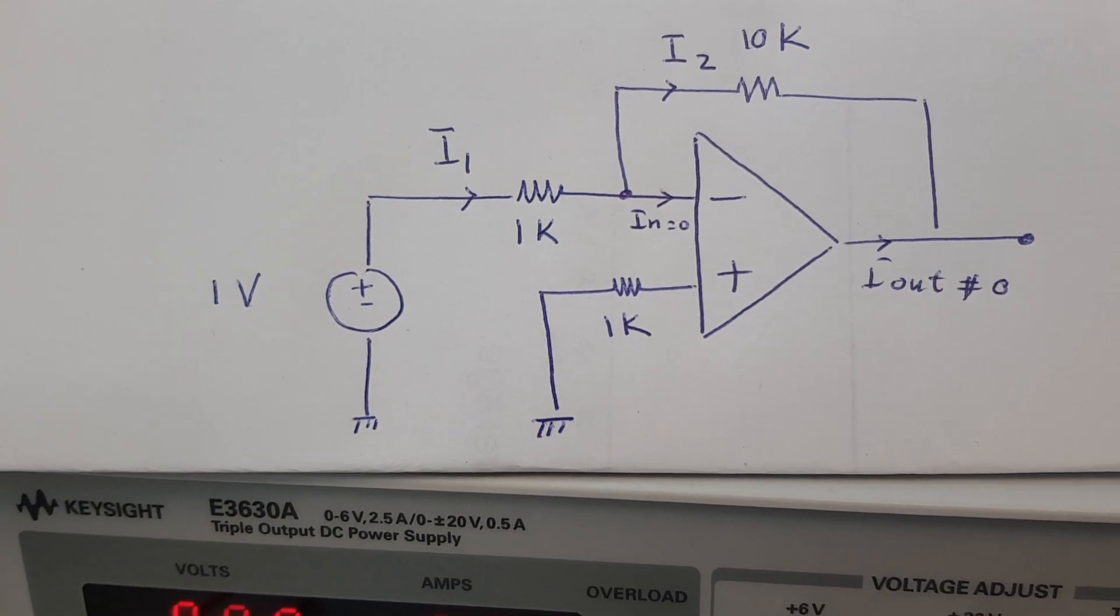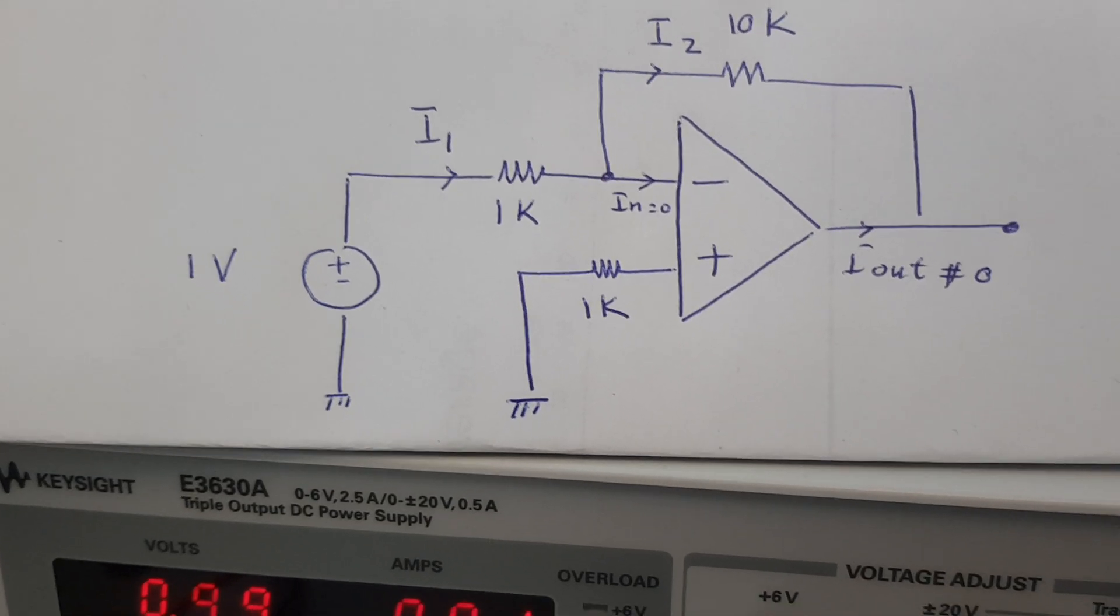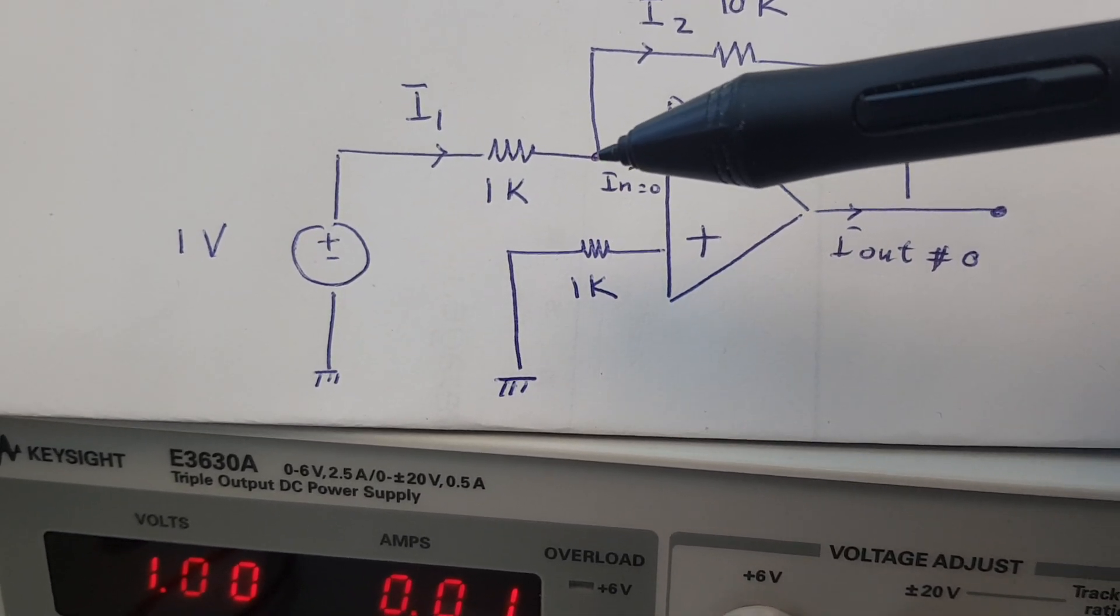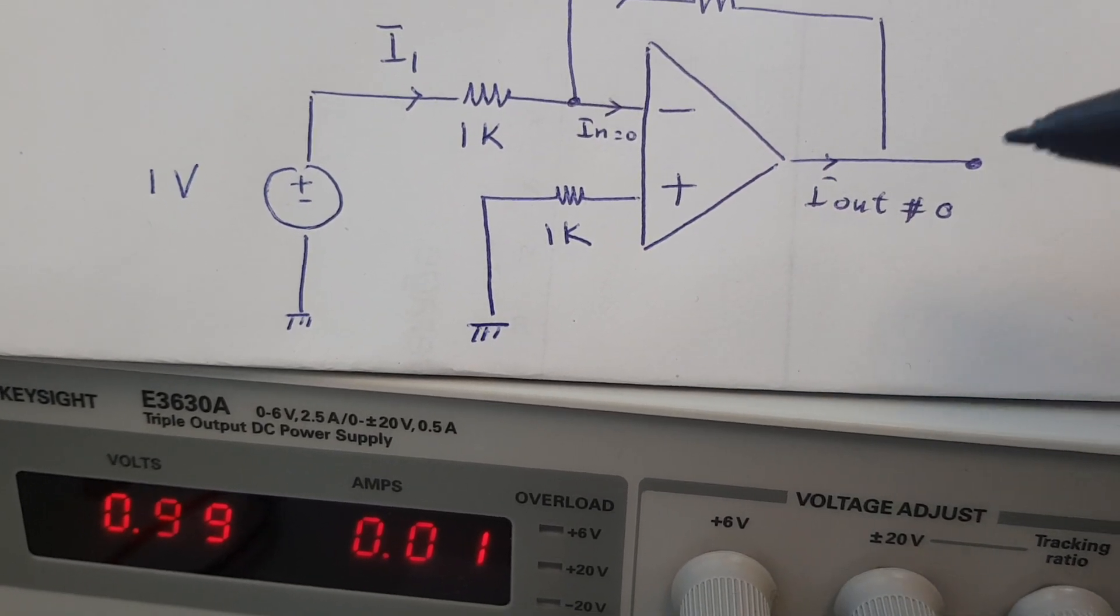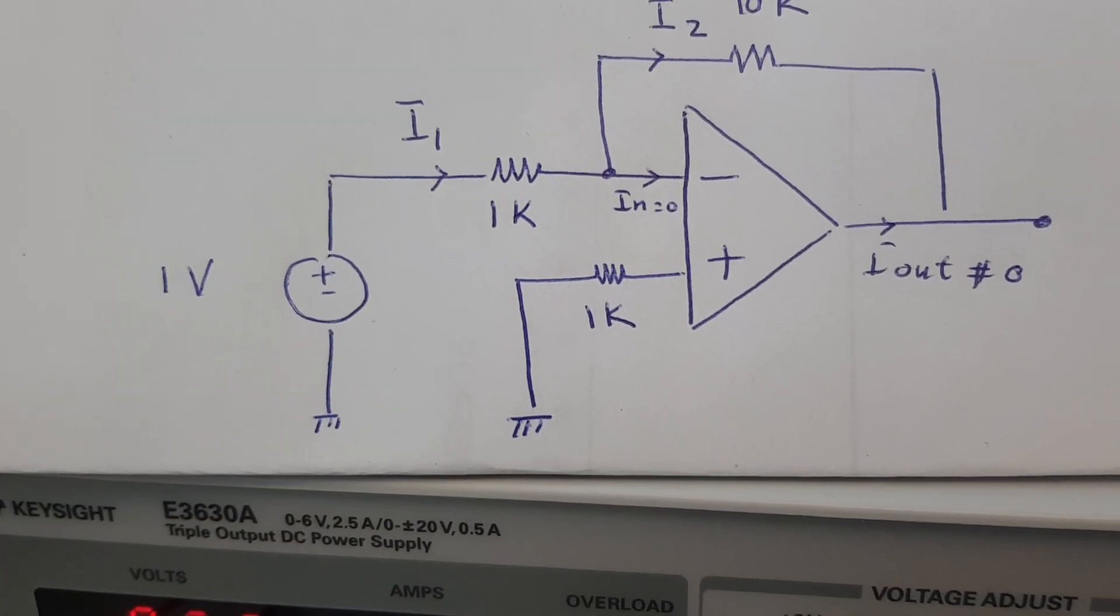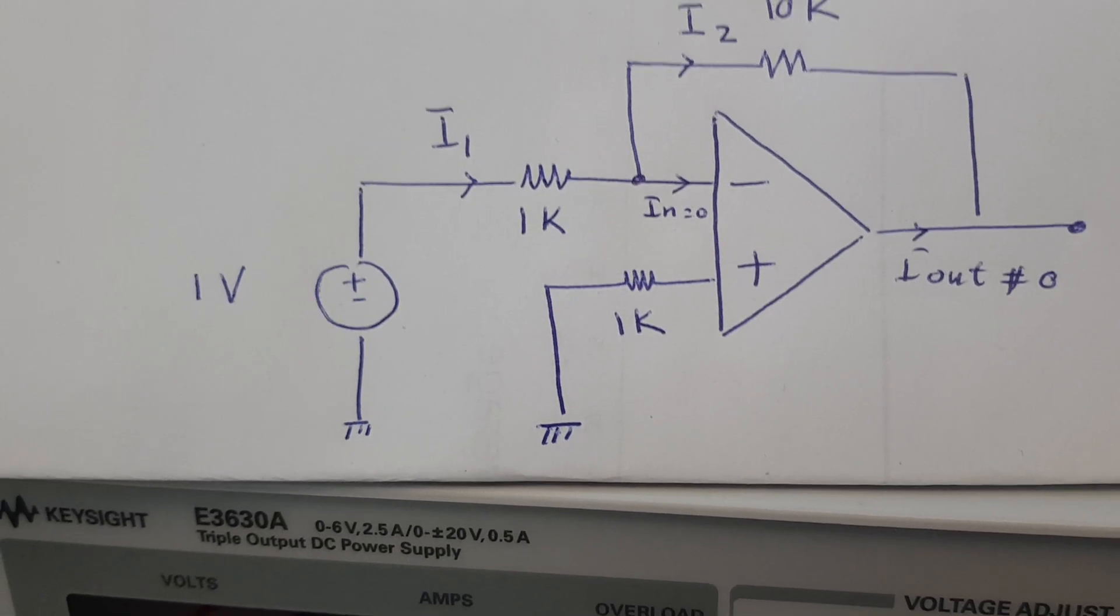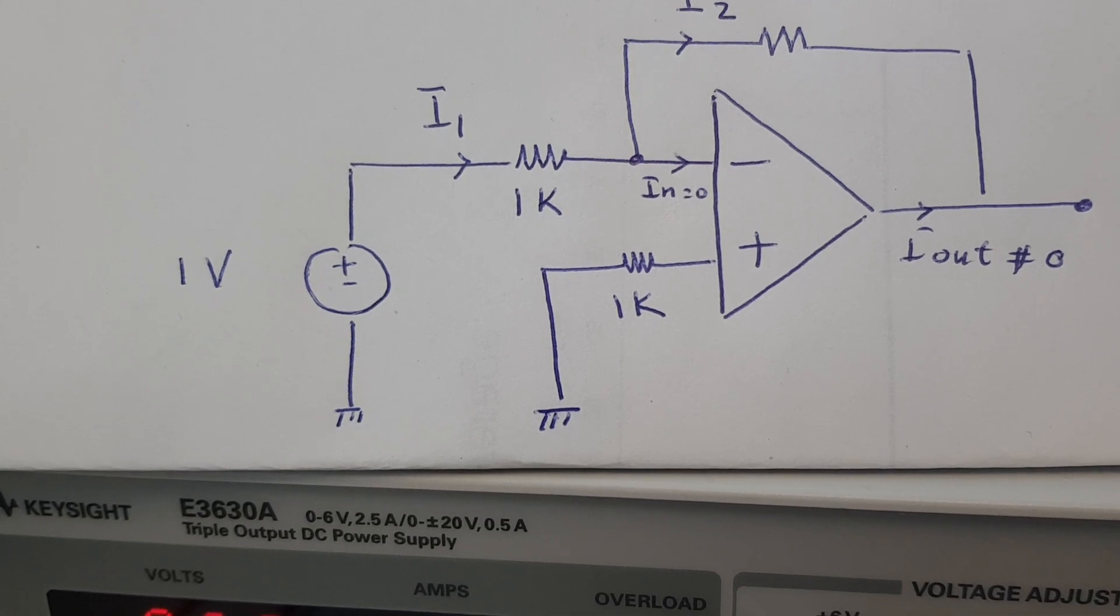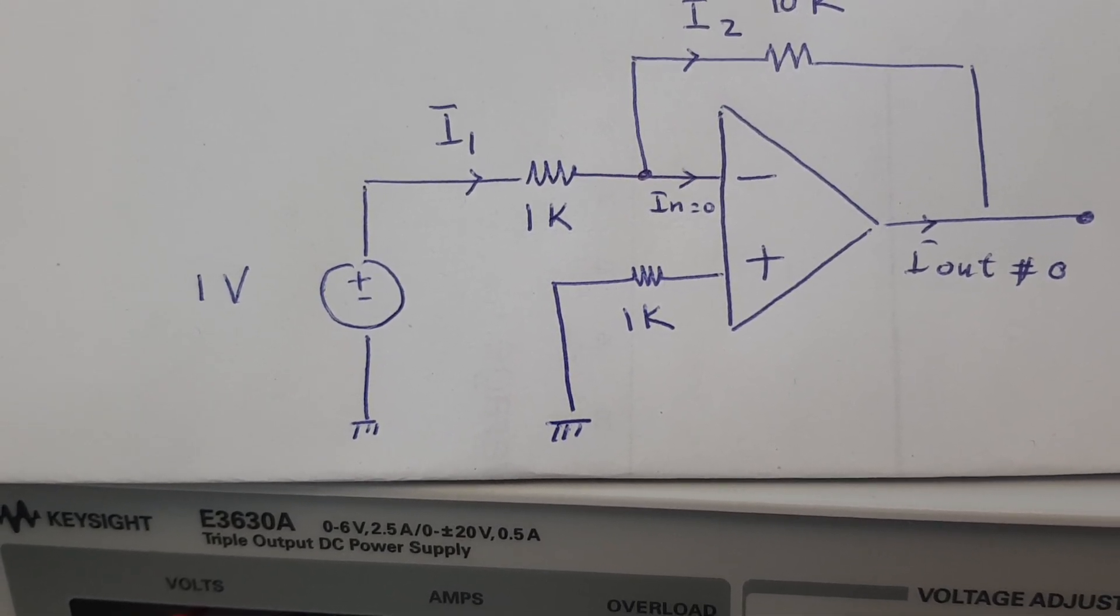A common question asked by many students studying op-amps for the first time: How come we can have a circuit where its input current is basically equal to zero and its output current is not equal to zero? If the input is zero, the output should be zero. That is the logic understanding of any basic system. So why do we assume that I_in is equal to zero in an op-amp but actually its output current is not equal to zero?